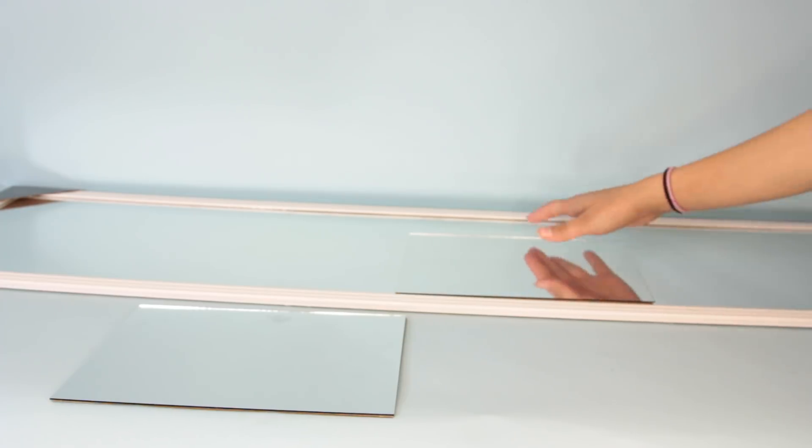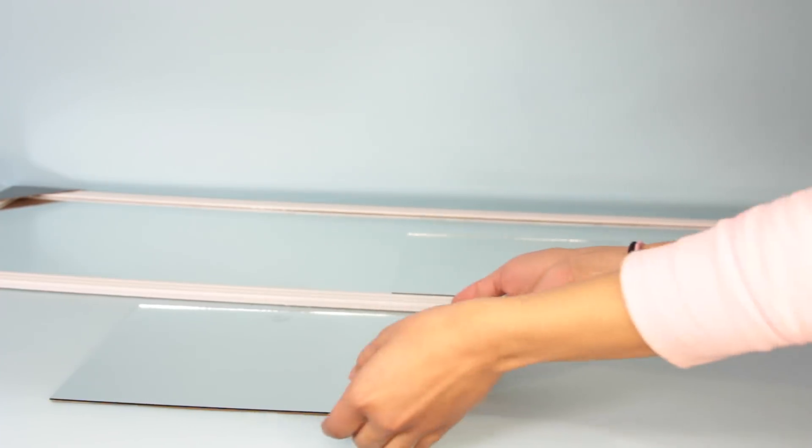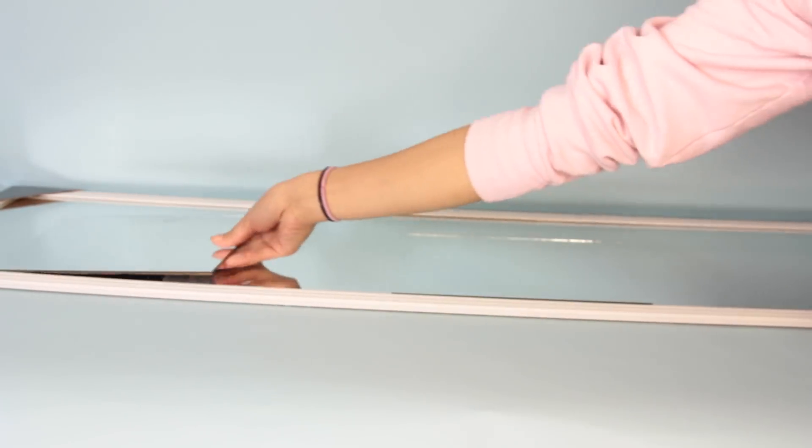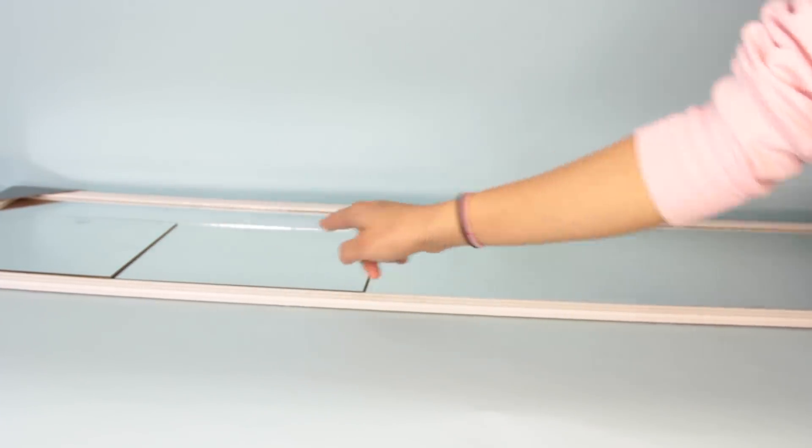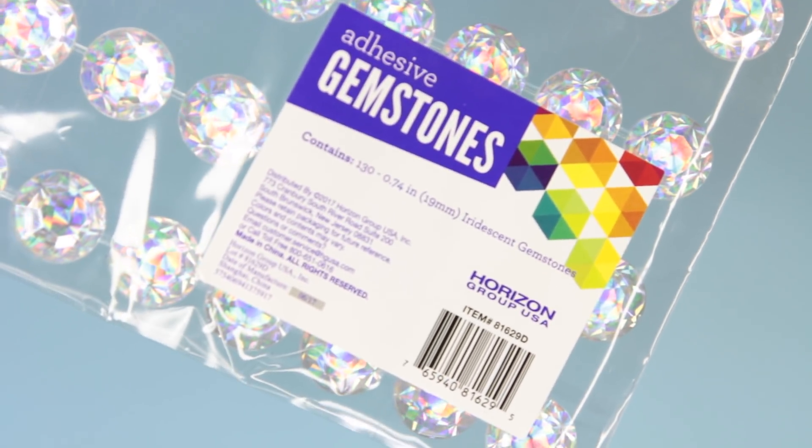Also, if you want to use the Dollar Tree mirrors to create a full-sized mirror, you're going to need a backing for it as well. So in my opinion, it's just easier to get a full-sized mirror somewhere else for an inexpensive price. For this mirror, I really wanted to copy what I keep seeing at Hobby Lobby.